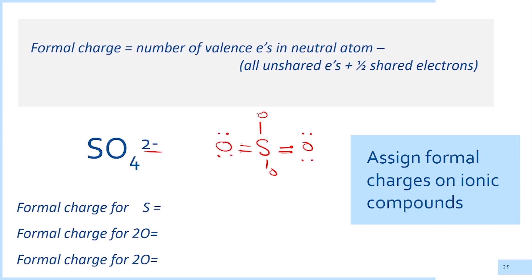The top doubly bonded oxygen has two electrons in the bond, so the rest of the six electrons — one, two, three, four, five, six — give us one lone pair with one extra electron, meaning we need to add another electron. This is why we write a negative charge for the extra electron added. The bottom doubly bonded oxygen is similar to the top, so we have another three lone pairs.